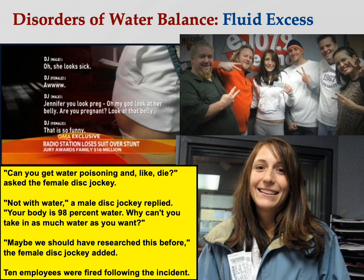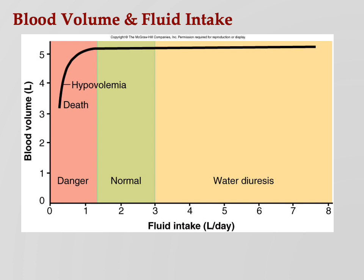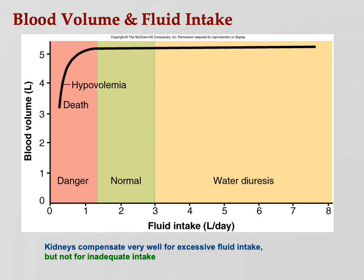Hypotonic hydration can kill you — pulmonary and cerebral edema. Normally, too much water is not a problem — look at the far right chart showing water diuresis: if you drink too much water, you just pee it out. On the other hand, your body can't make up for not having enough water — that leads to hypovolemia and then death. The kidneys can compensate very well for excess, but there's nothing you can do about not having enough.